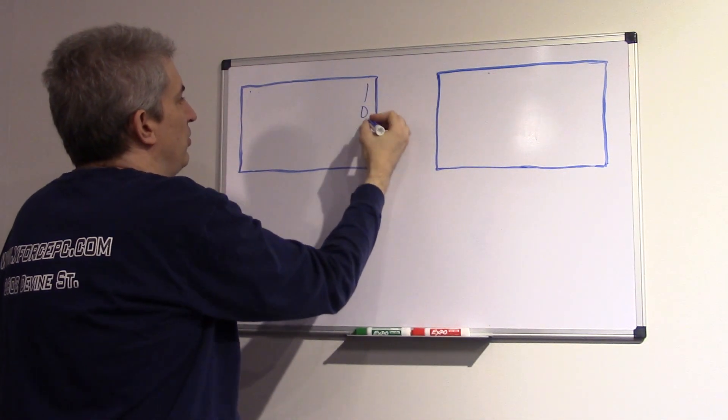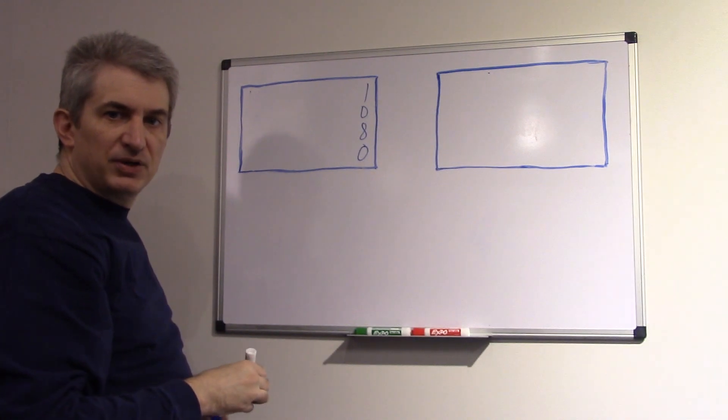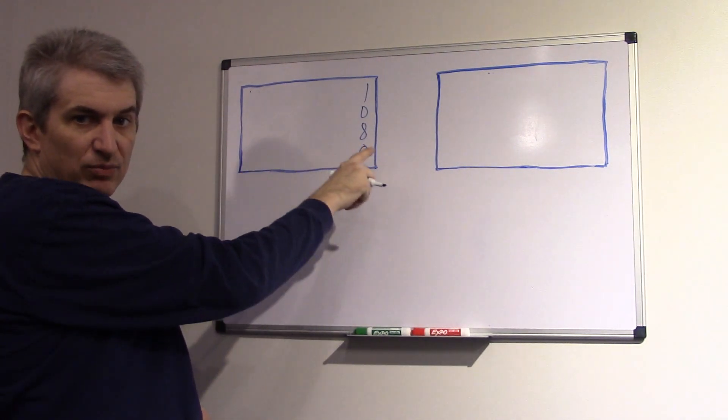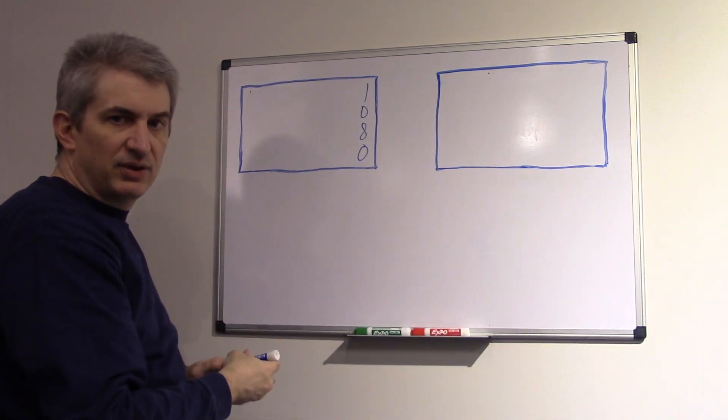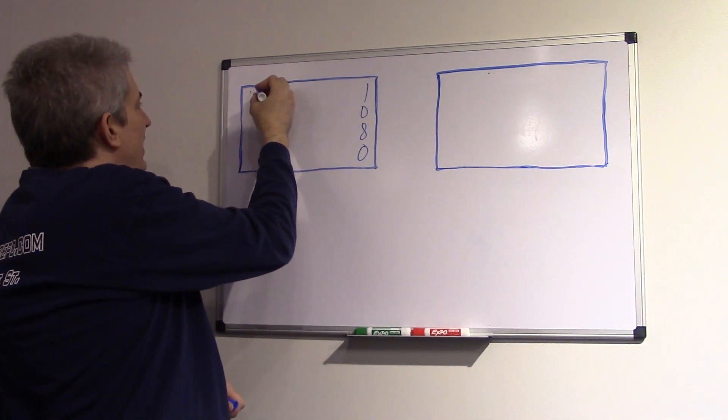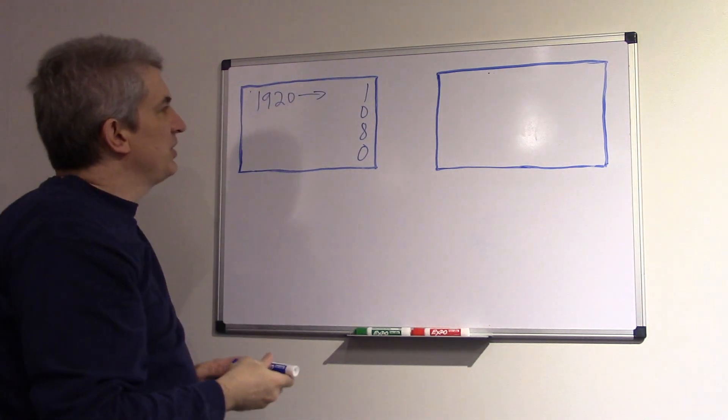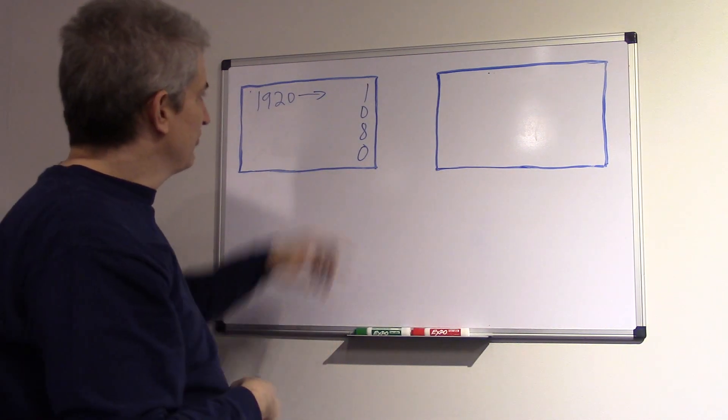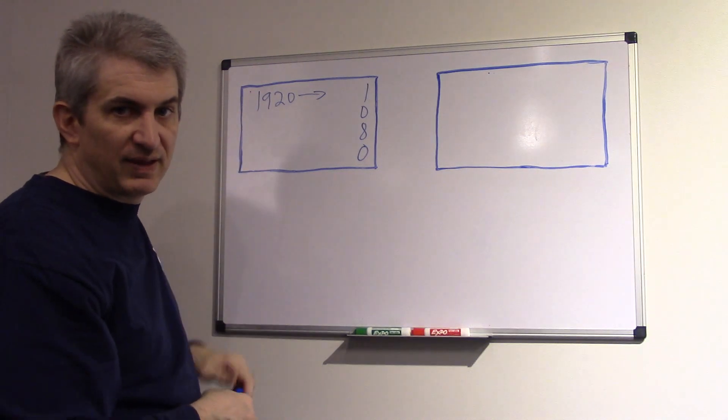So I'm going to write 1080 over here. That's how many vertical pixels we have. Now we also have horizontal pixels, and we have more of those because it's kind of a widescreen. It's 16 by 9 resolution. So that's 1920. That number you don't hear quite as much because it's kind of assumed that if you have 1,080 vertical pixels, you must have 1920 horizontally, and that is the case.